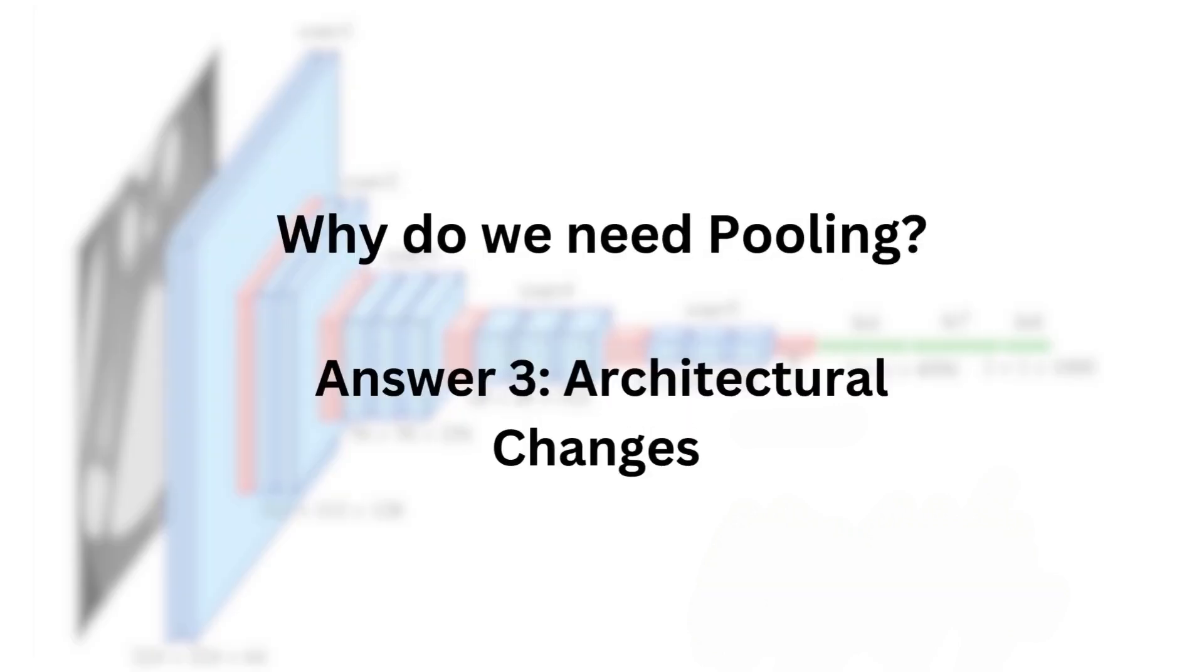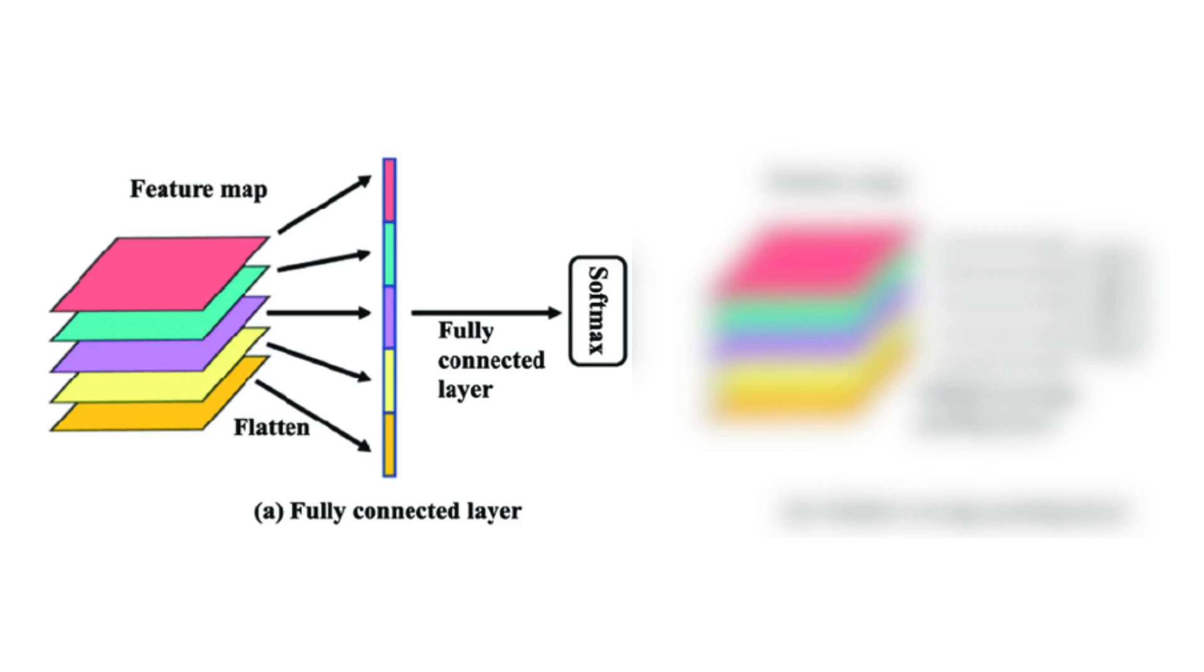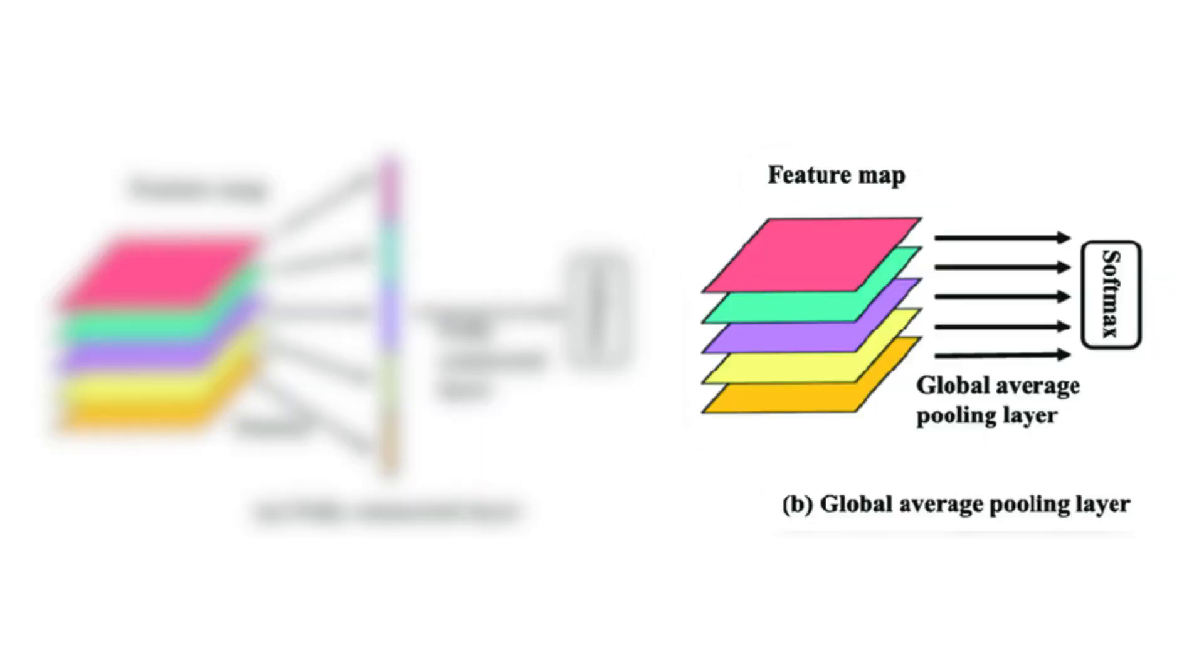And the last answer to the question of why we need pooling is for specific architectural changes. Usually when you have a fully connected layer at the end of a CNN, you need to take all of your feature maps and flatten them to feed them to the last bit of the network, which is fully connected layers. This puts the convolutional part of the network as a kind of feature extractor of sorts and the fully connected part as the actual classifier. You can use a type of pooling which is called global average pooling that allows you to take each feature map and output one number for each of them to a softmax function directly. This allows the convolutional network to change the architecture to reject the need for fully connected layers at the end and instead use convolution all the way throughout.